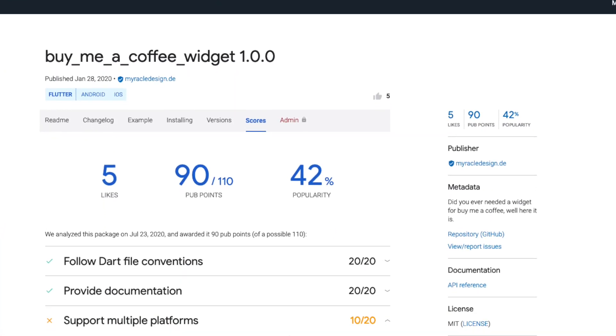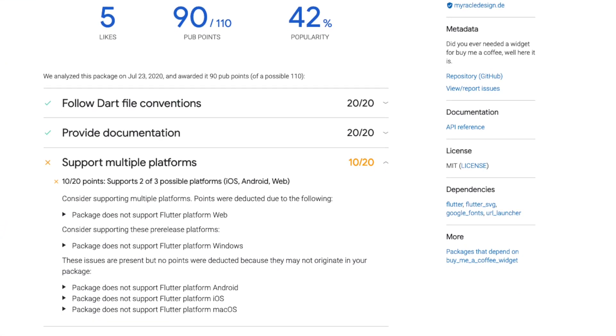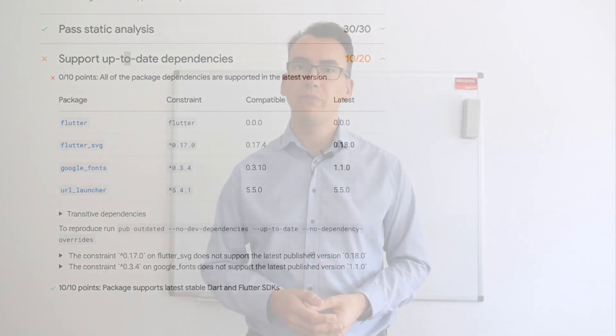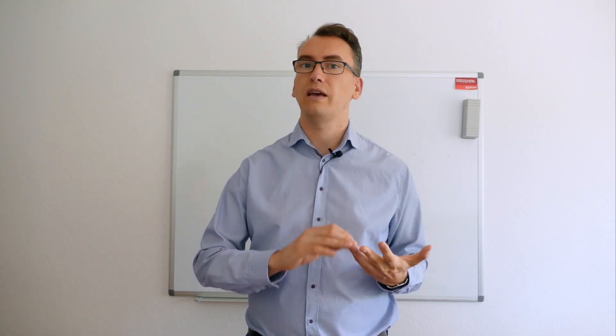Now it's possible to achieve 110 points per package if you also support the web, meaning you support all three platforms: iOS, Android, and web. But there's currently also a downside because it seems that sometimes relevant packages are not on top of the list. We're sure the Flutter team and Dart team are already aware of the problem and working on it.